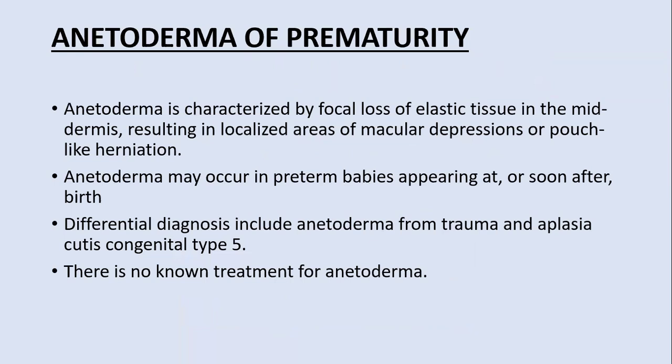The first is anitoderma of prematurity. Anitoderma is the term used for a focal loss of elastic tissue in the mid dermis that results in localized areas of macular depression or pouch-like herniation. Anitoderma may occur in preterm babies appearing at or soon after birth. The differential diagnosis includes scar from trauma or aplasia cutis congenita. There is no known treatment of anitoderma.